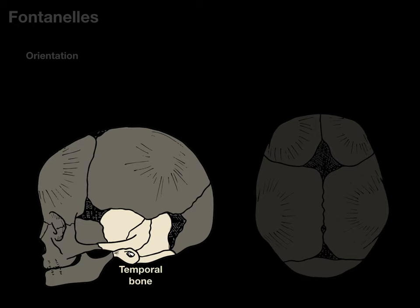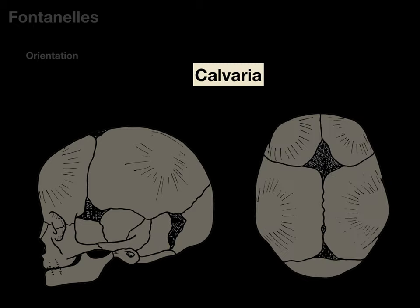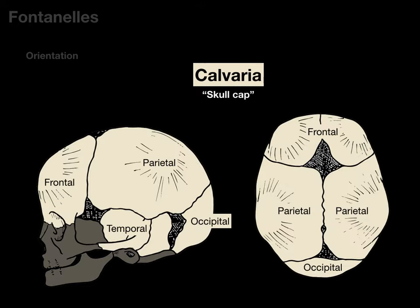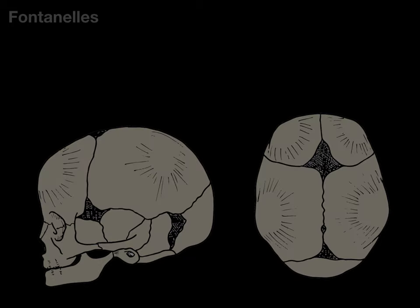Along the lateral part of the skull, we find the temporal bone. The calvaria is a term you'll hear quite a bit, meaning the skull cap, referring to all these bones we see. When we talk about fontanelles, it's these bones and the spaces between them that form not only sutures but fontanelles.